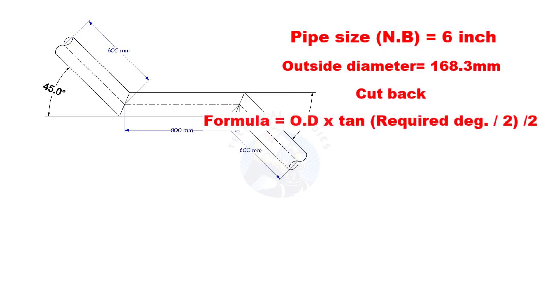Cutback is OD multiplied by tan half degree divided by 2. Here, the required degree is 45. Half of 45 is 22.5.